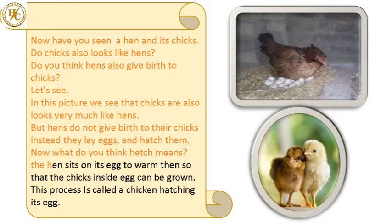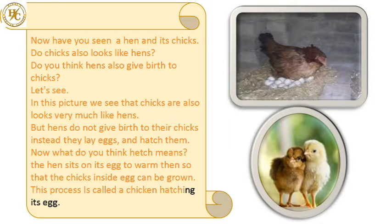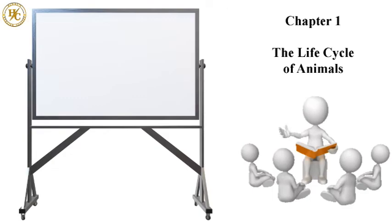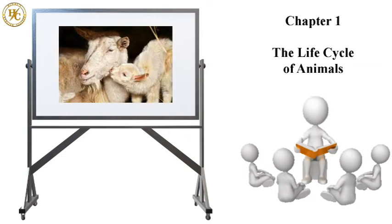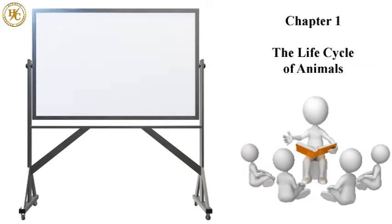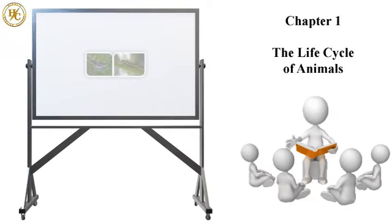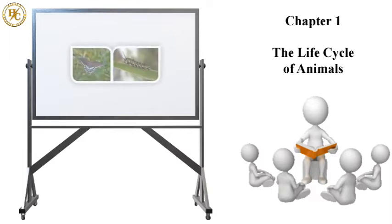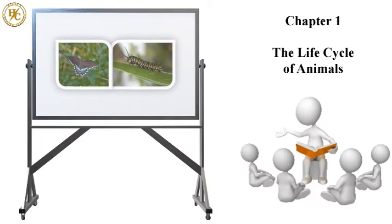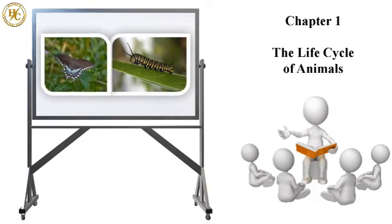The hen sits on its eggs to warm them so that the chicks inside can grow. This process is called a chicken hatching its egg. We know that there are similarities in the look of a goat and its kid. However, in some animals the young ones that grow into an adult look very different from the young animals. This type of change in form is called metamorphosis.